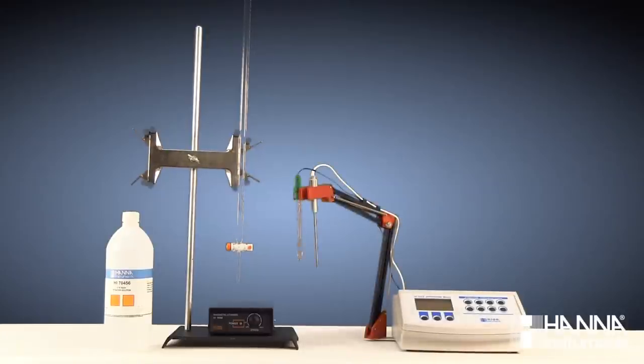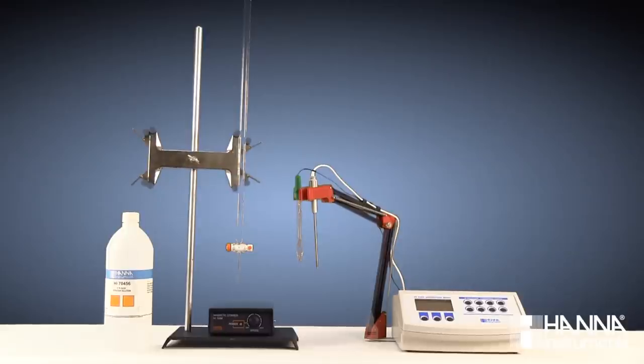A pH meter, such as our HI3222 research grade meter, a pH electrode, such as our HI1131B, an automatic temperature compensation probe, and a color indicator. Today, we'll be using phenolphthalein, which changes from colorless to pale pink at a pH of approximately 8.2.